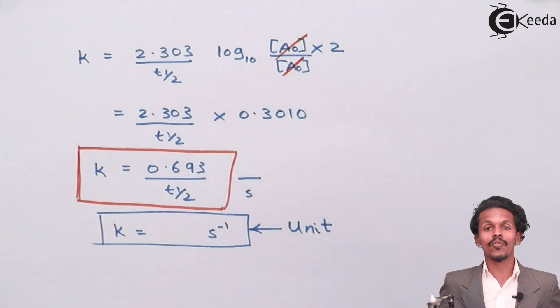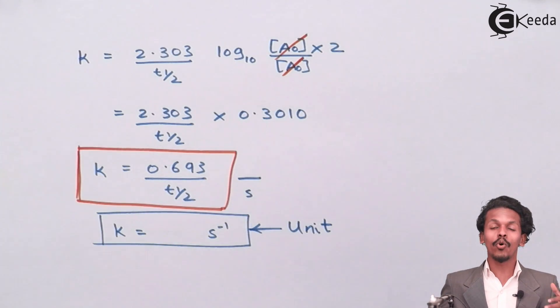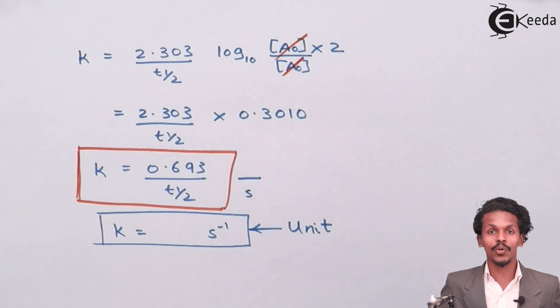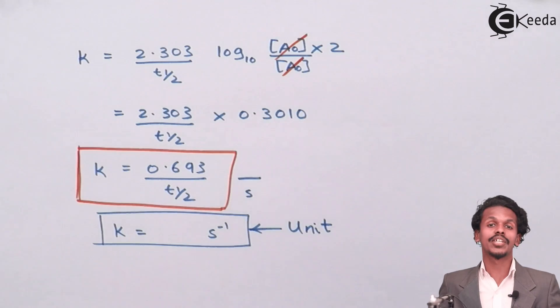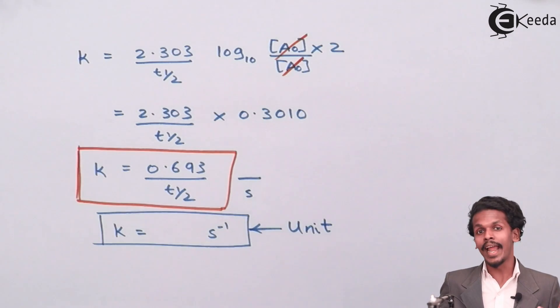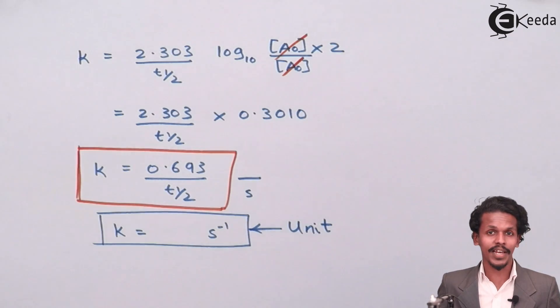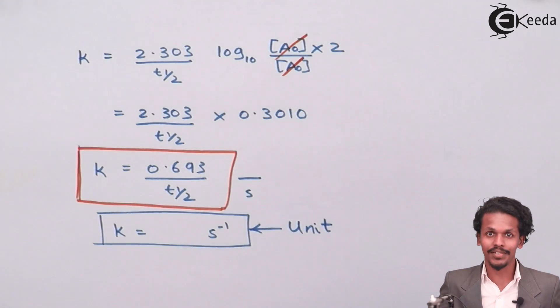So this is what we have derived — an equation for the rate constant in terms of half life for the first order reaction. Thank you friends for watching this video. I hope you liked it. Please share it with your friends and don't forget to subscribe to the Ekida channel. Thank you so much.